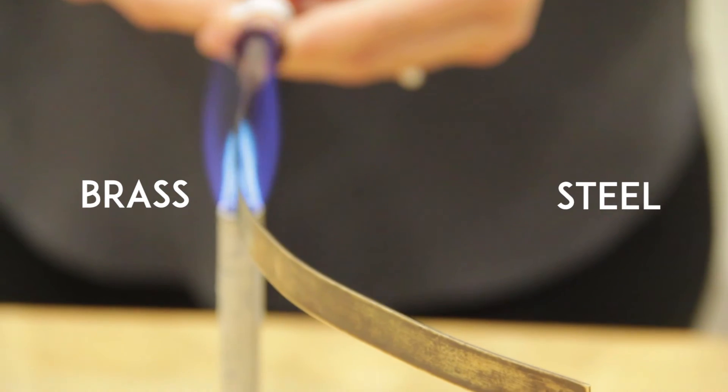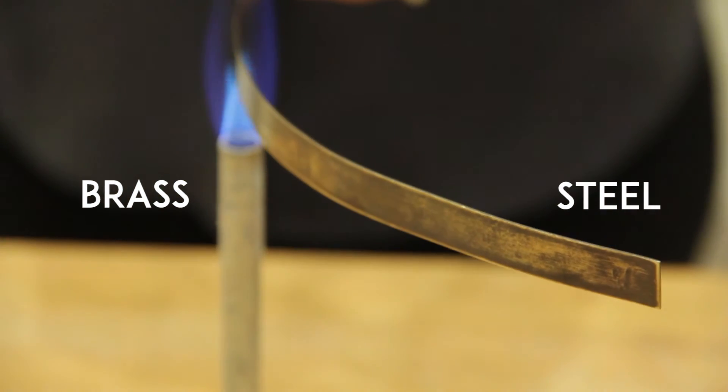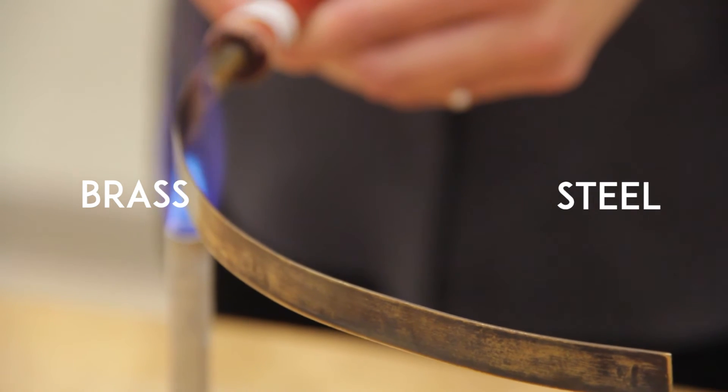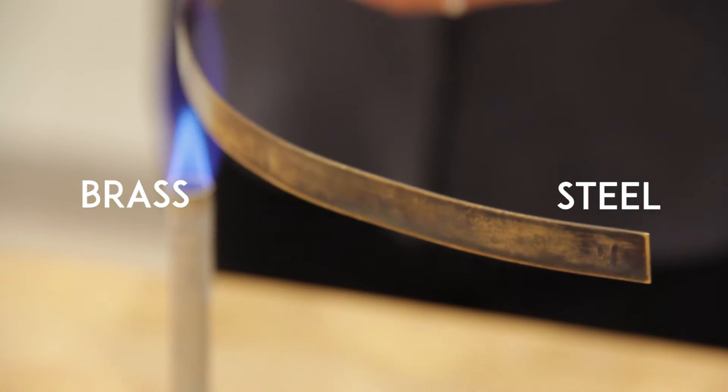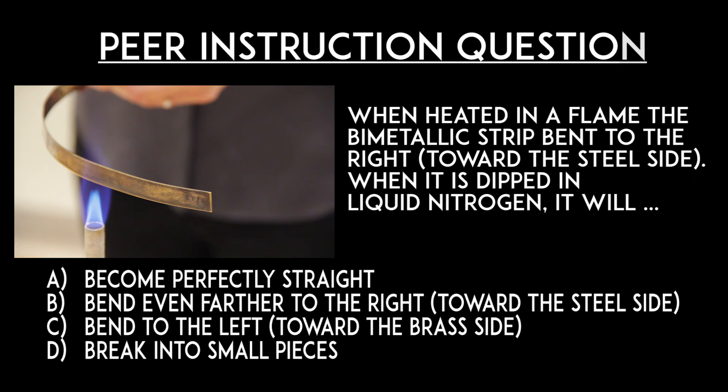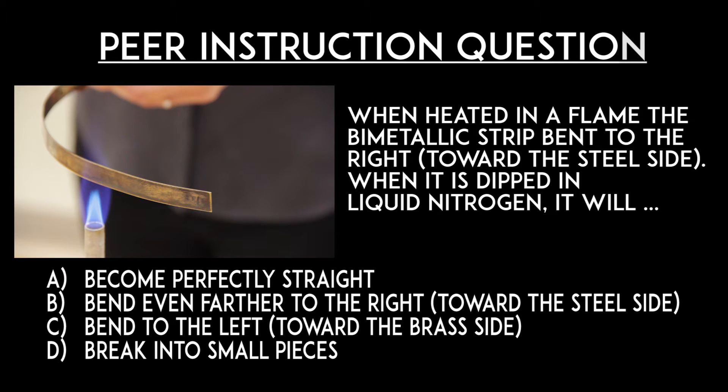Let's check our understanding in a peer instruction question. When heated in a flame, the bi-metallic strip bent to the right, toward the steel side. When it is dipped in liquid nitrogen, it will do what? Please record your vote on a piece of paper and explain your reasoning for choosing this answer. Your instructor will now stop the video.